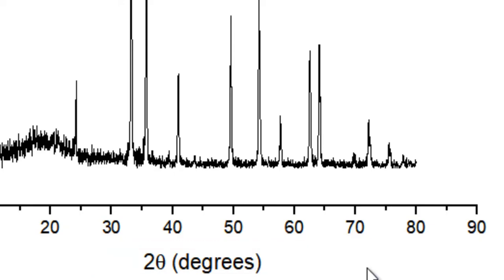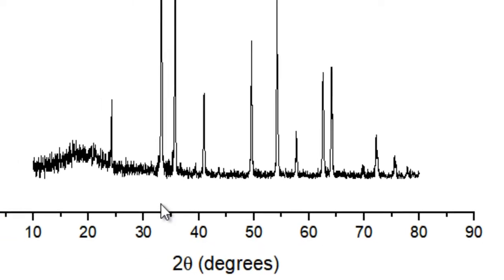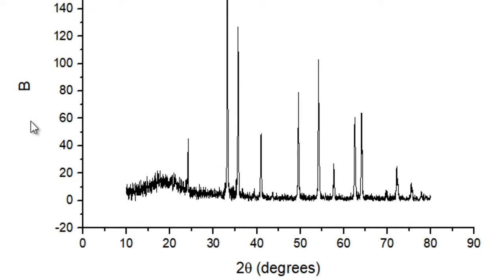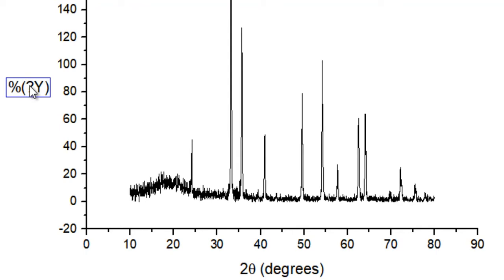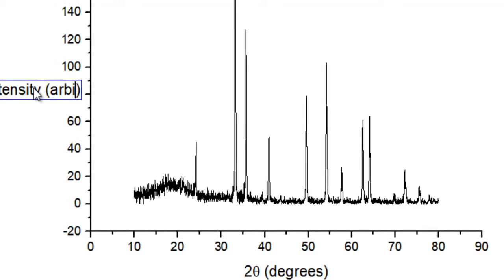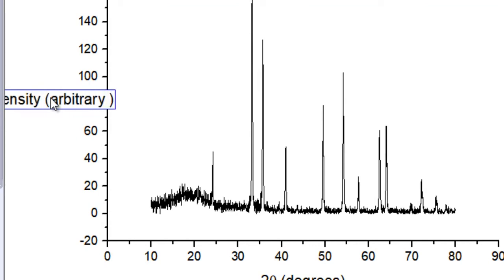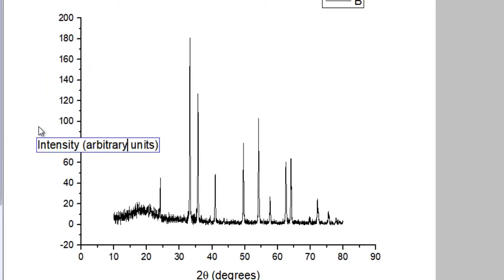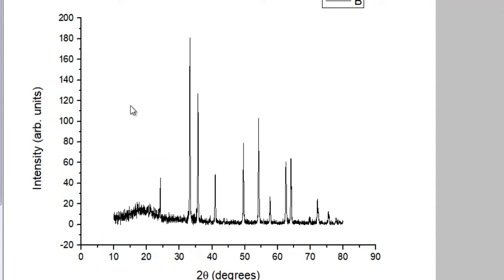Now the X axis is labeled. The next thing is to label the Y axis. Double-click on it, select all the existing text, and write 'Intensity.' In parentheses you can write the units — intensity has no particular units, it's just arbitrary units, so you can write that, or write 'ARB.' in shorter form.